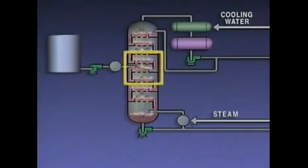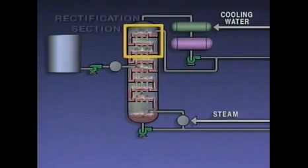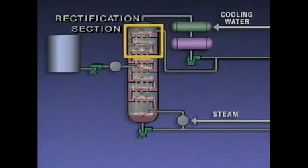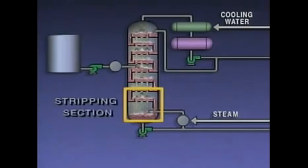Not every distillation tower is designed in the exact same way. However, every tower can be divided into three basic sections. The middle section is where the feed enters the tower and part of the feed vaporizes — this vaporization is commonly known as flashing, so this section is often called the flash zone. The section above the flash zone is called the rectification section, where the concentration of lighter components increases. The section of the tower below the flash zone is called the stripping section, where the lighter components are vaporized or stripped from the heavier liquid.